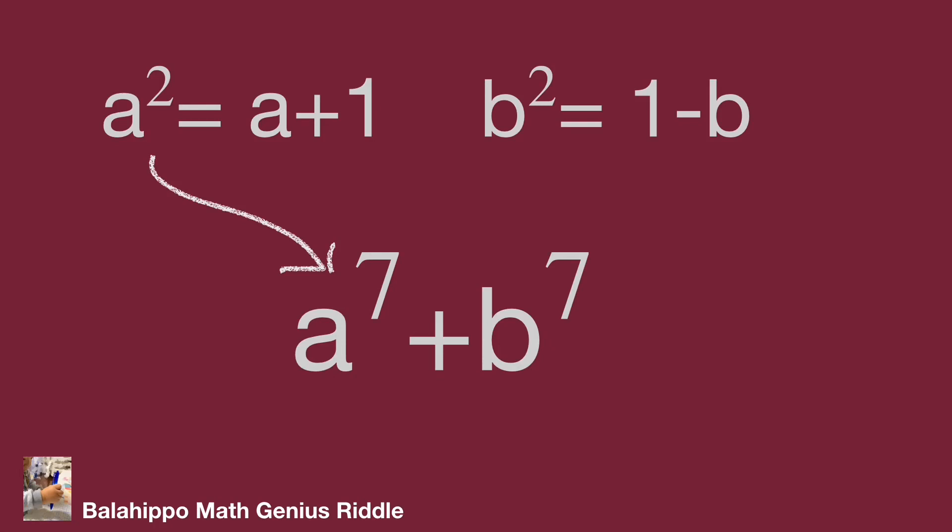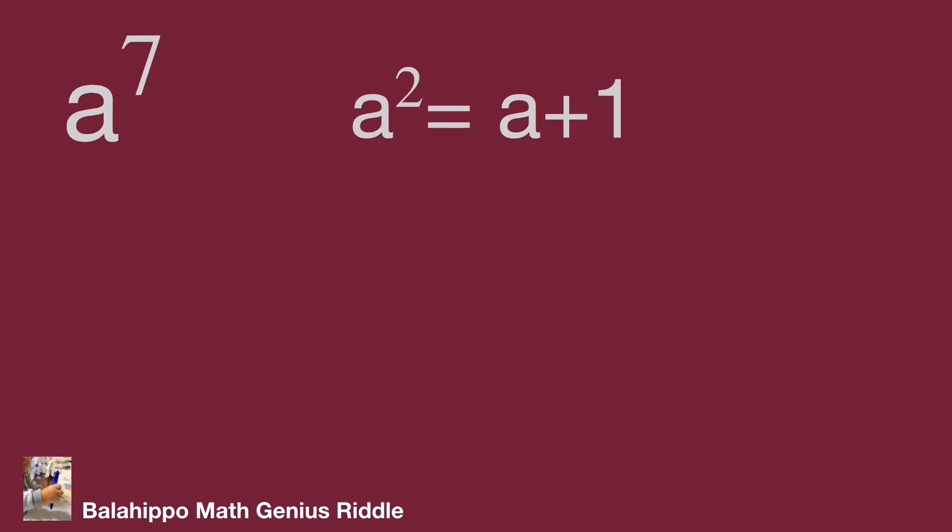The given equation a squared equal to a plus one shows the message that the indices of a powers have a number difference of one, from square is two to one to zero, and a not equal to zero. So multiply a to both sides of the equation, we get a cubed equal to a squared plus a.